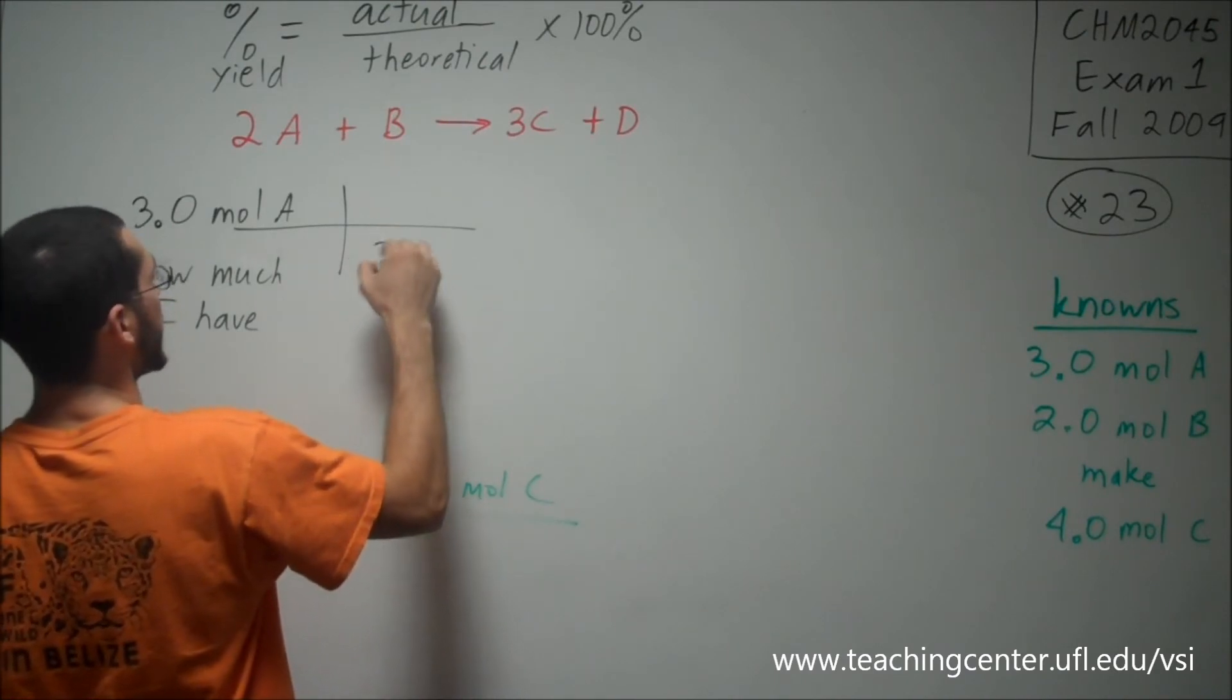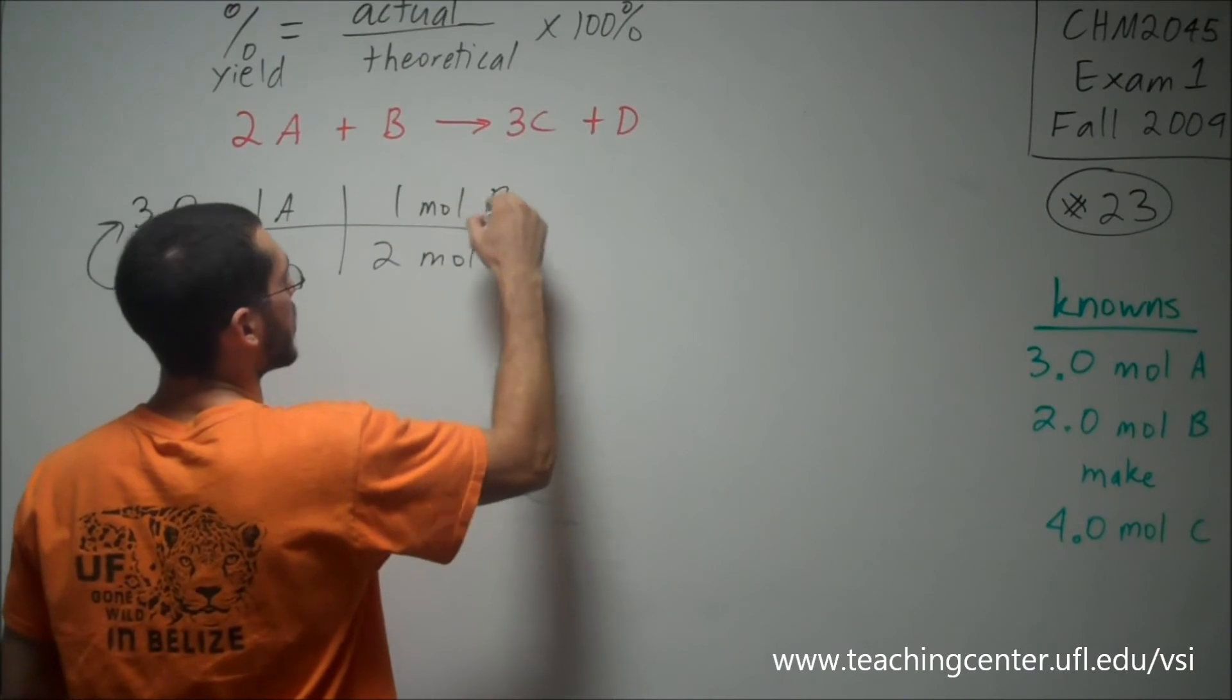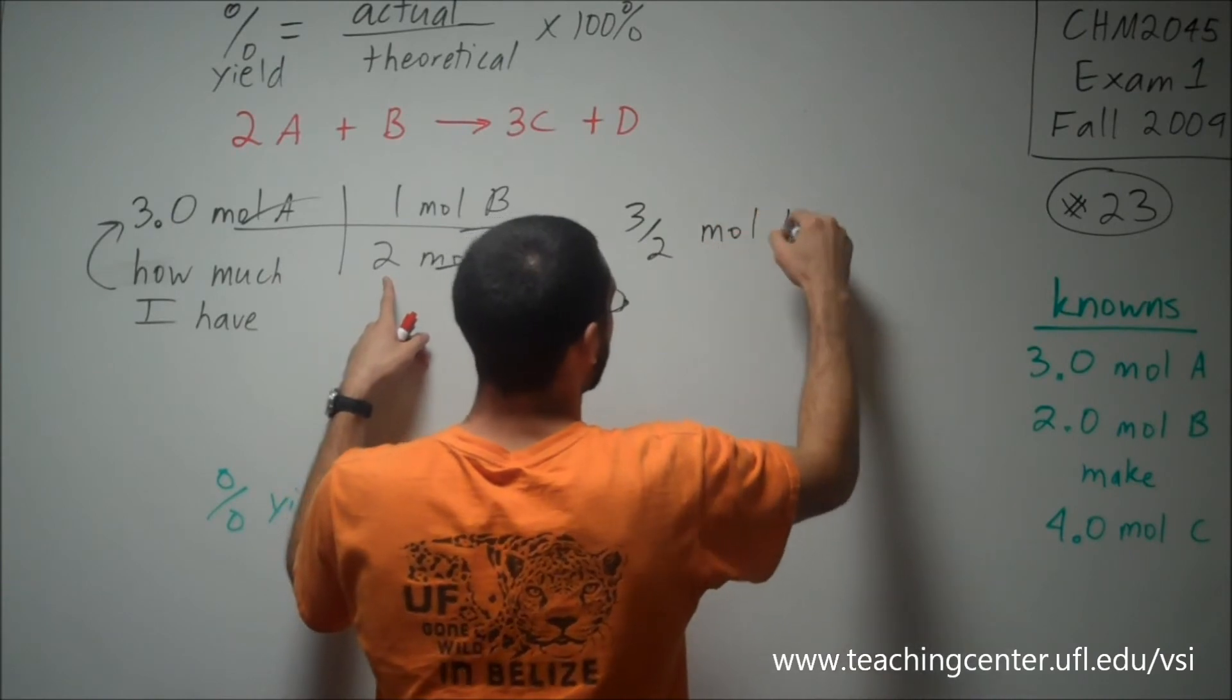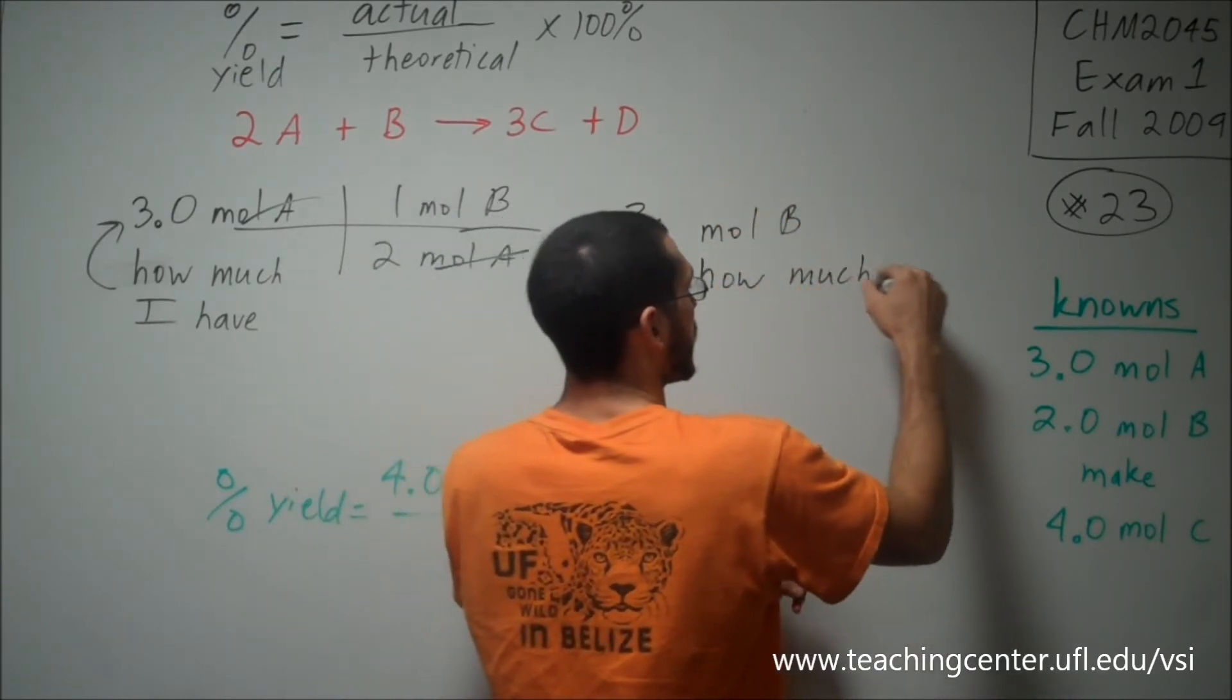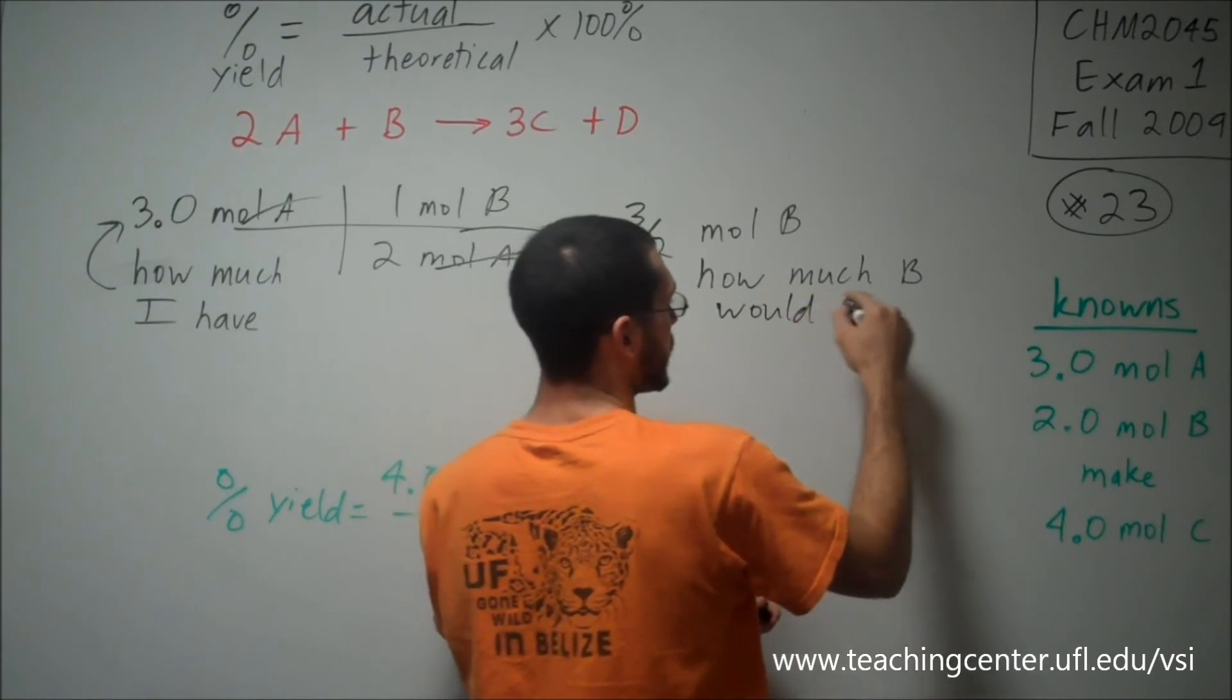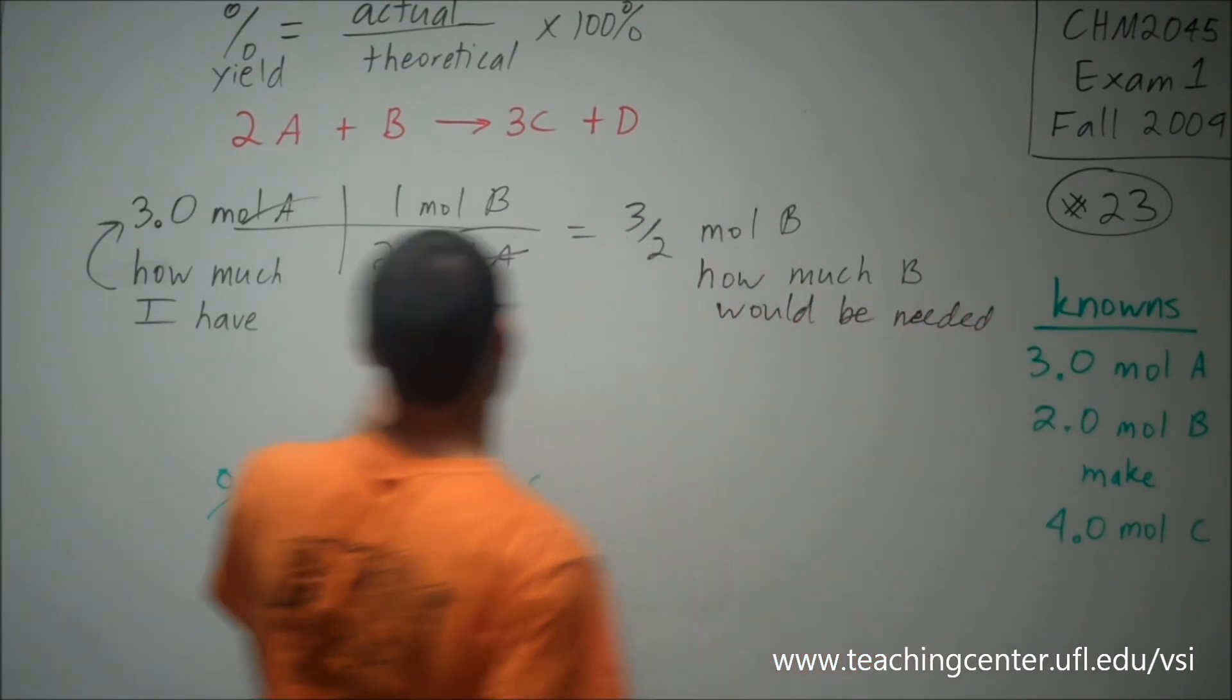So I'm going to carry that ratio down, 2 moles of A to 1 mole of B. Moles of A cancel. I'm left with 1.5 moles of B. This is the theoretical amount. So how much B would be needed in order to react away all my A.